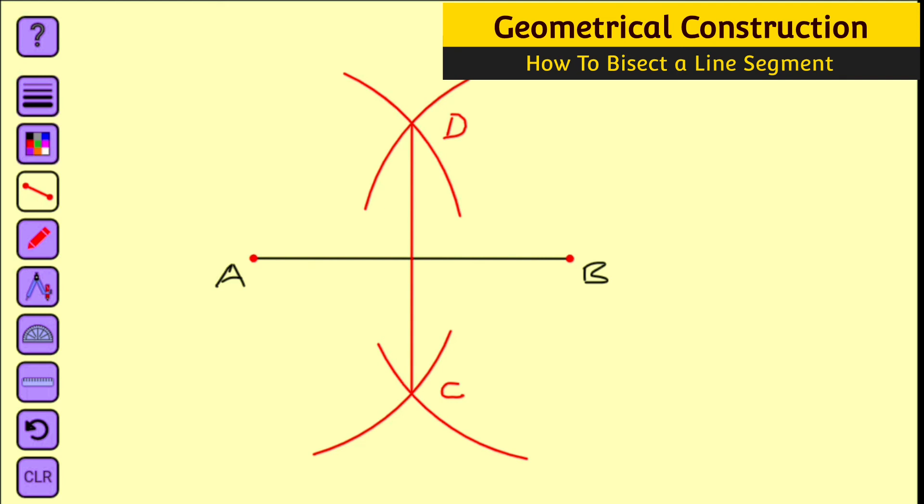Now this line segment AB has been divided into two equal parts. You know, initially it was eight. Now halfway we are going to have four here and four here, four centimeters each.